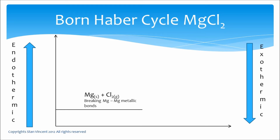Since we are trying to prepare magnesium chloride solid, we start with magnesium solid and chlorine gas. The first step is to change magnesium solid to magnesium gas. The blue arrow represents the energy change involved in that process. If you want to change a solid to a gas, energy has to be supplied to the system, so delta H will be positive — it is an endothermic reaction.